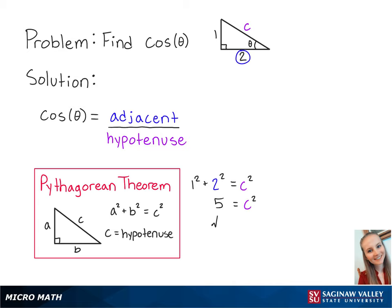Next, we're going to take the square root of both sides so that we have the square root of 5 equals C.